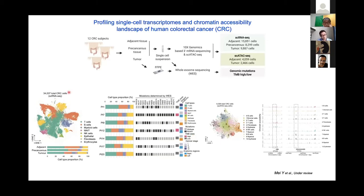By clustering the cells, we found a very high proportion of immune cells containing the major immune cell types, including T cells, B cells, myeloid cells, NK cells, and mast cells. We also retrieved some non-immune cells, including epithelial cells and fibroblasts. For our single-cell ATAC-seq data, we can see that immune cells show open chromatin on the CD45 loci, while non-immune cells show open chromatin on, for example, the EPCAM loci, but not the CD45 loci.